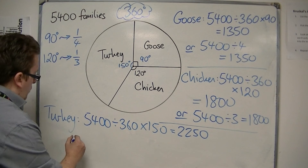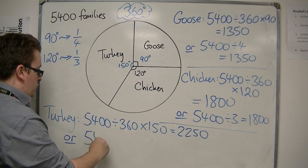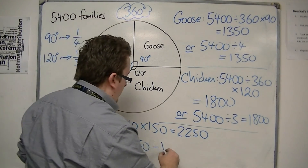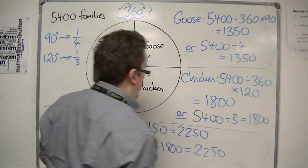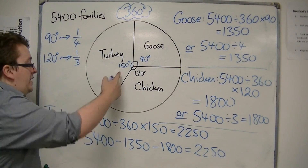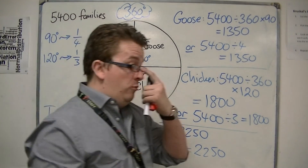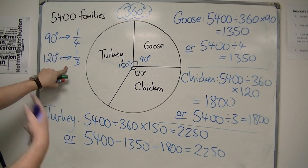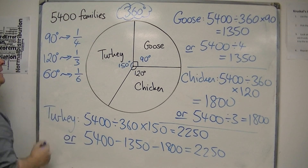You could do it that way, or the easier way is: knowing there are 5,400 families, and 1,350 are going to have goose and 1,800 are going to have chicken, what is left would be 2,250 — so we wouldn't have needed to work out the angle at all. There are multiple ways of solving the same problem. It's useful to remember that 90 degrees is a quarter of a circle, 120 degrees is a third, and 60 degrees is a sixth.